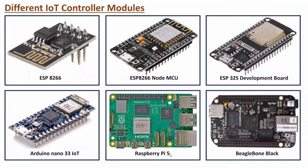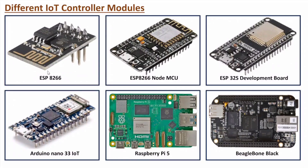One more module I'd like to explain is the BeagleBone Black. This module has high-end computational complexity, supporting advanced applications like AI and ML. It has USB port, Ethernet port, and many IO terminals. So for high-end applications, one can go for Raspberry Pi 5 or BeagleBone Black. For complex IoT applications, prefer ESP32 or Arduino Nano. For simple IoT applications, go for ESP8266, and for moderate level IoT applications, go for ESP8266 NodeMCU.